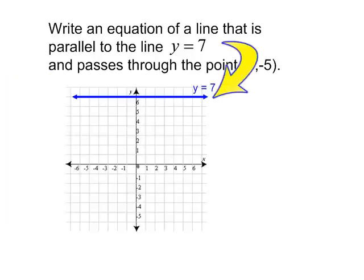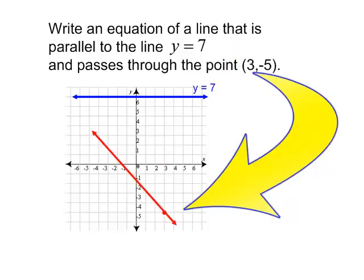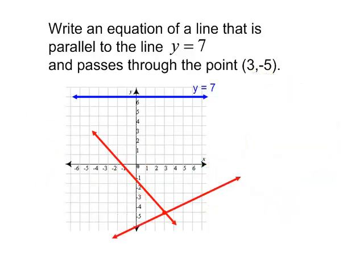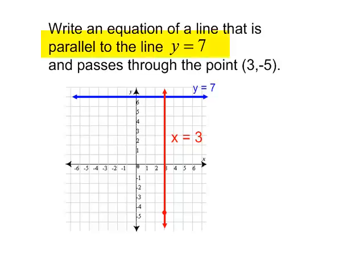This is the line y equals 7. I want my line to go through the point (3, negative 5). So how will my line look? Will it be going diagonal? Will it be going up and down? Oh, this is a vertical line and this is the line x equals 3, but it said parallel.